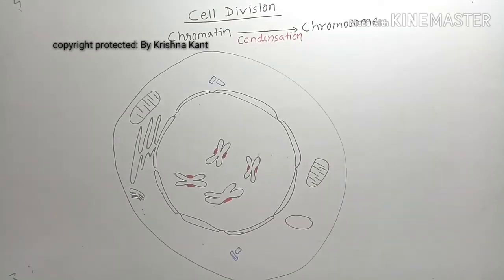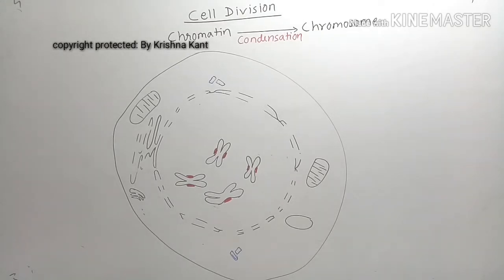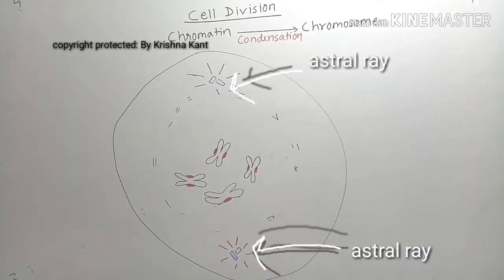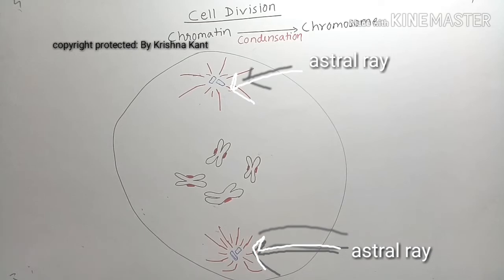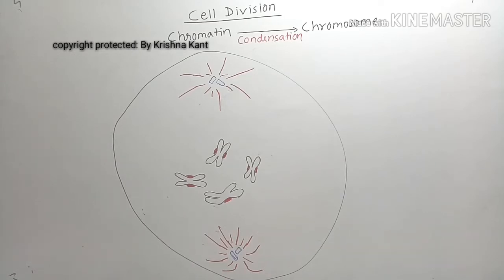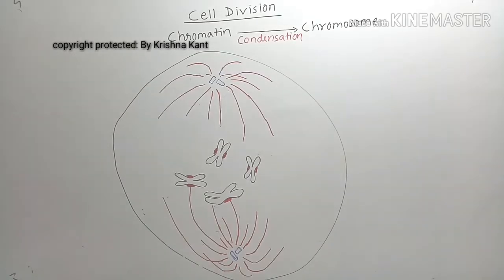At the two opposite poles, there are centrioles. The nuclear membrane and most of the organelles disappear, and astral rays begin to form at the opposite poles — this is called amphiastral.